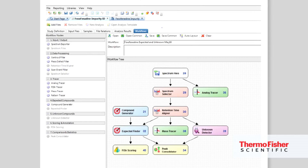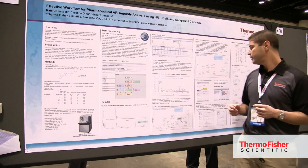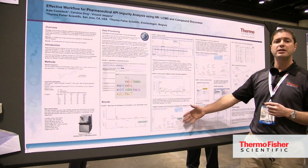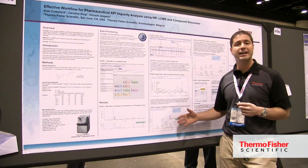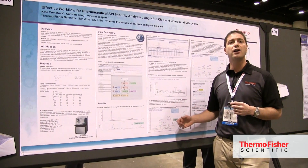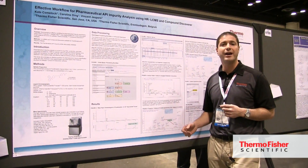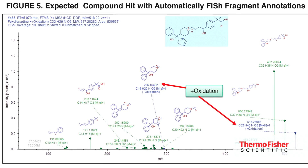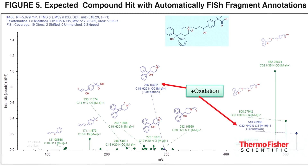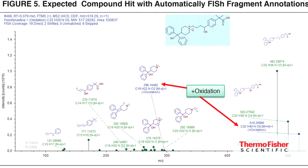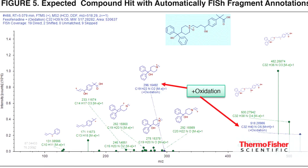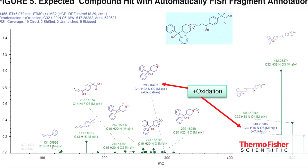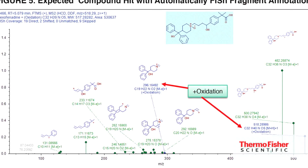Another nice feature of Compound Discoverer is that MS/MS spectra are automatically annotated and color-coded to provide improved ease of use for structural assignment.